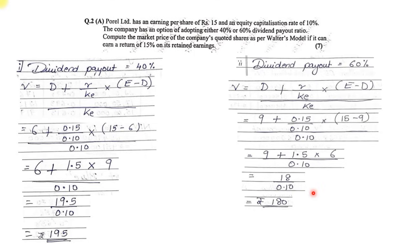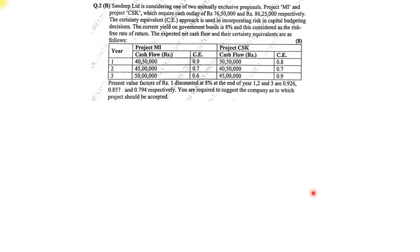Now the last question - option 2B: Sandeep Limited is considering two mutually exclusive proposals, Project MI and Project CSK, requiring outlays of 76,50,000 and 86,25,000 respectively. The certainty equivalent (CE) approach is used to incorporate risk in capital budgeting decisions. The current yield on government bonds is 8 percent, considered as the risk-free rate and discounting factor. Expected net cash flows and certainty equivalents are given for three years.